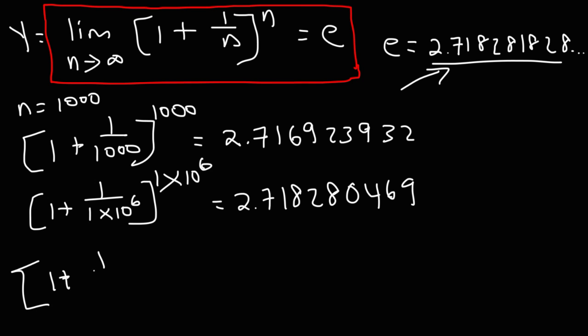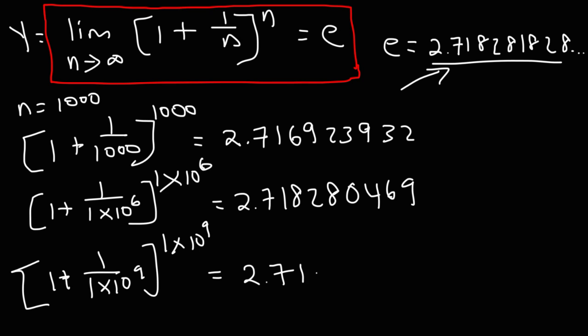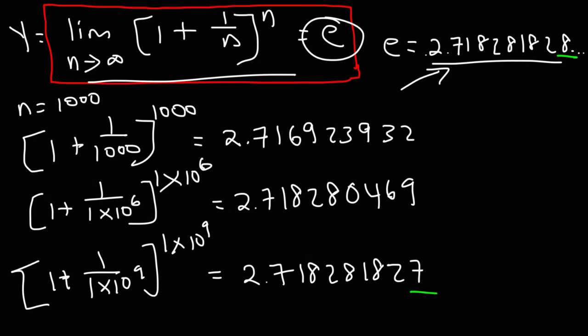Let's try one more: a billion, which is 1 times 10 to the 9. According to the calculator, this gives 2.718281827. The only difference from e is in the very last digit. So you can clearly see that as n gets larger and larger, this entire expression approaches e. That's one way we can derive the number e using limits and natural logs.